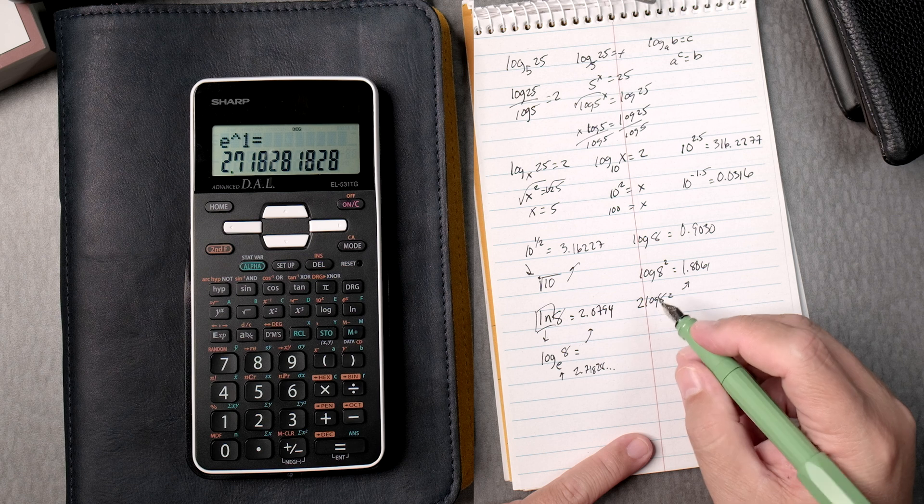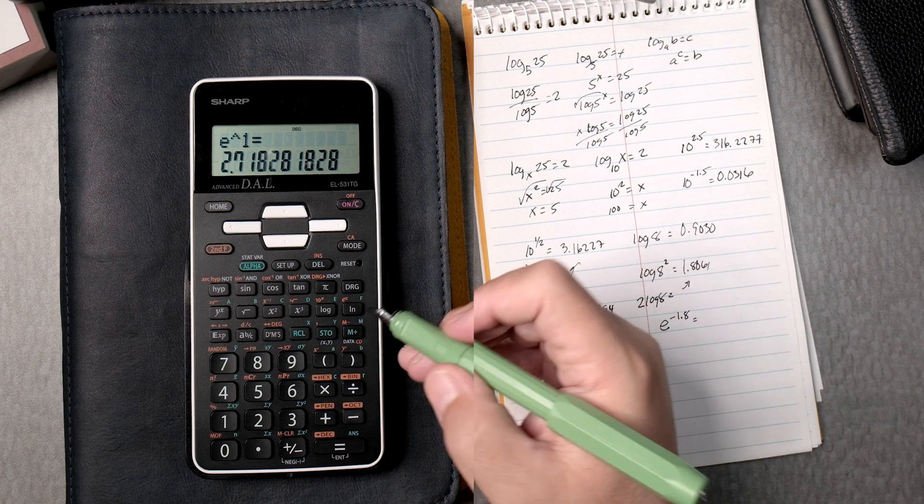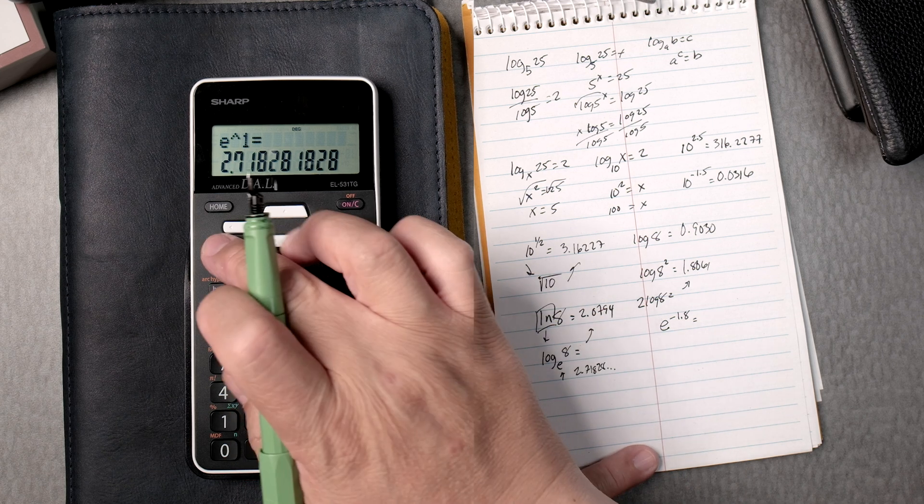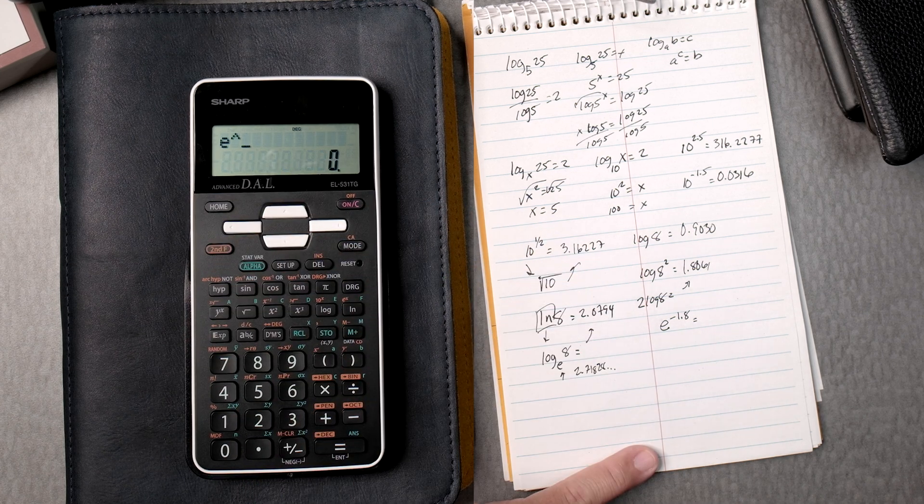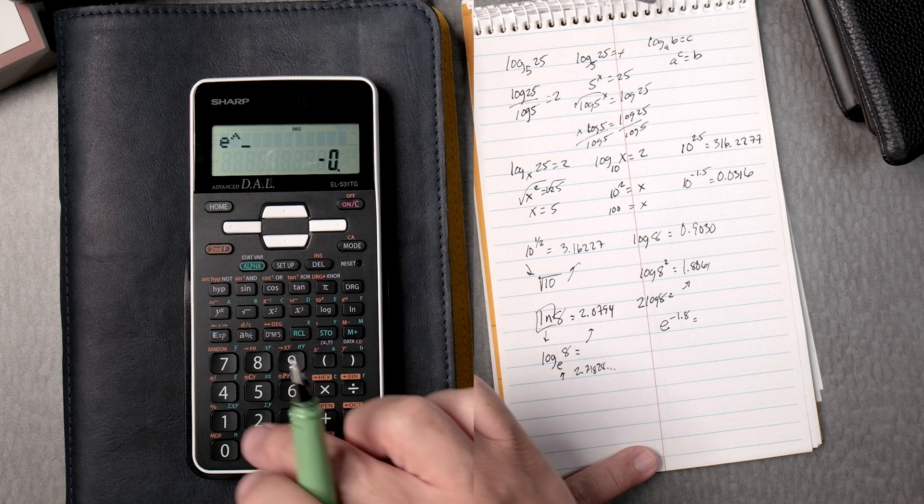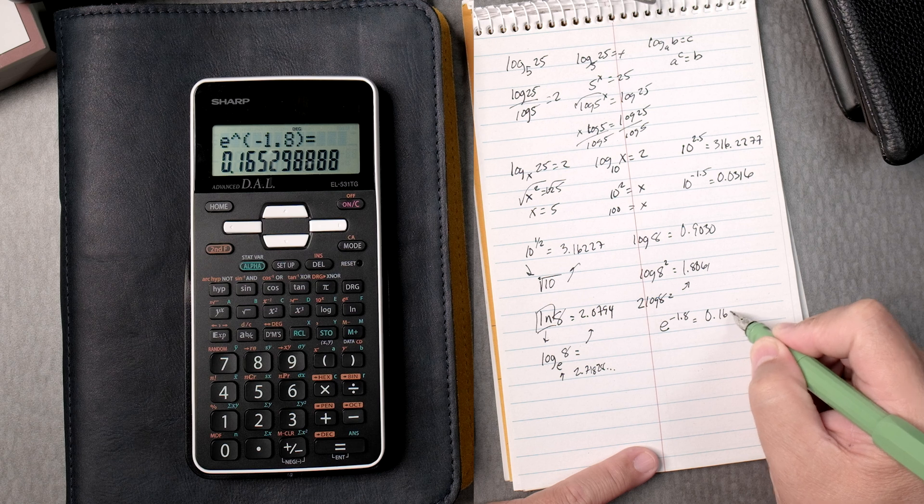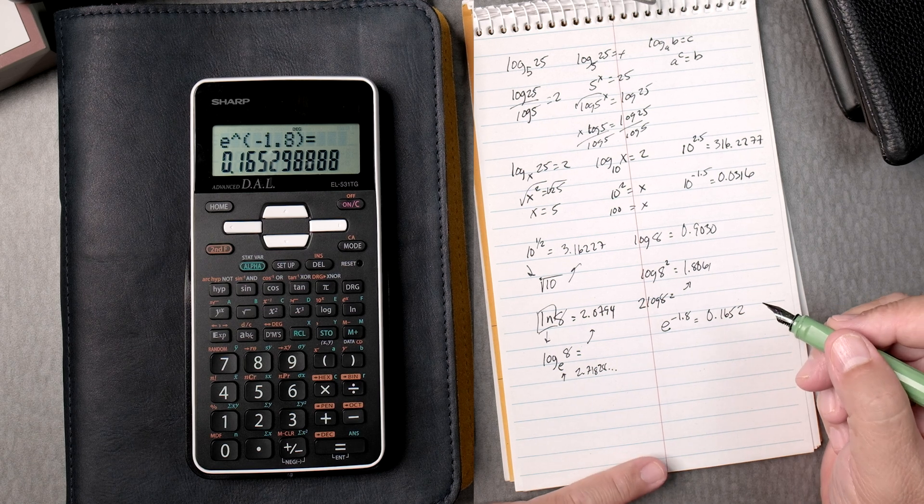So, e to the negative 1.8, right? We know that e to the x is right here. Second, e to the x, negative 1.8 equals, and that gives you 0.1652. Great.